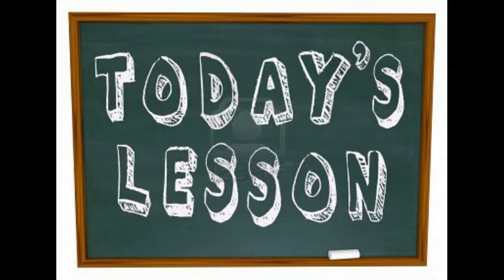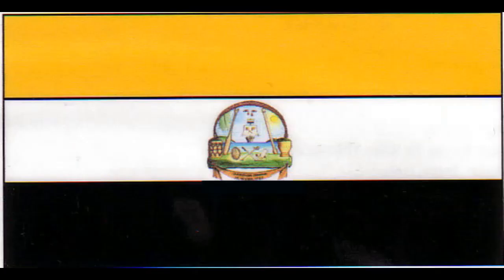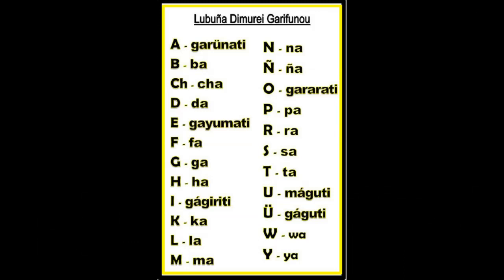Today's lesson is going to be on the Garifuna alphabet, which we say Lubunya di Murei Garifumu, which is the Garifuna alphabet. The letter A, we would say, Garunati.